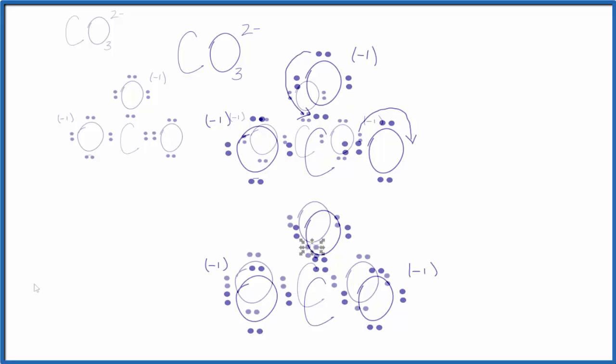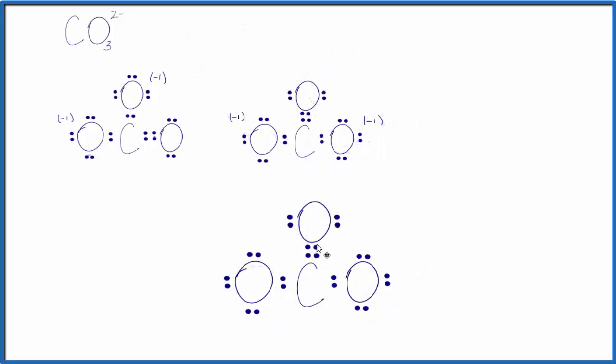Let's draw another one. Let's push these electrons up here. Now we have a single bond, and then we can push these electrons to form a double bond. Again, our formal charges will be on the oxygens with the single bonds.